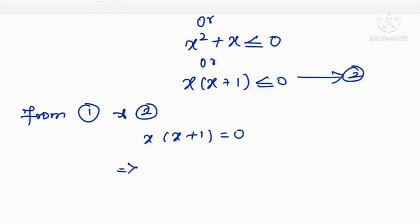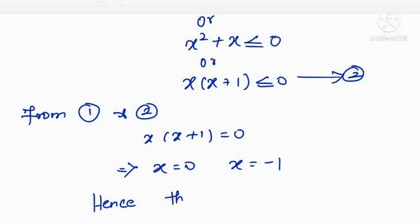This implies x equals 0 and x equals minus 1. Therefore, we have two solutions for this equation, so the number of solutions is 2.